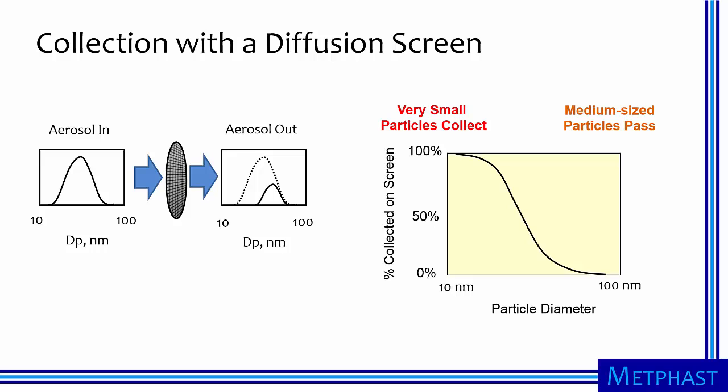Diffusion can be used to remove small particles by passing a particle-laden airstream through a screen. Brownian motion causes the smallest particles, say with a diameter of 10 nanometers, to jitter more than medium-sized particles, say a 100 nanometer sized particle. The smallest particles therefore have a high probability of hitting and collecting on the screen, having a high collection efficiency. In contrast, the medium-sized particles tend to follow the airflow through the screen with low collection efficiency.